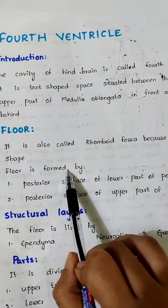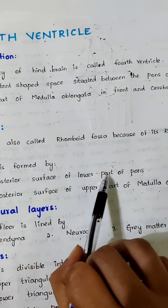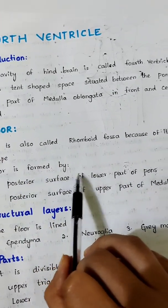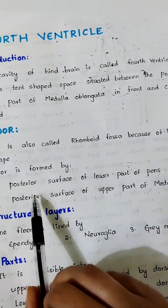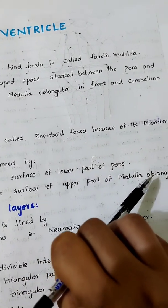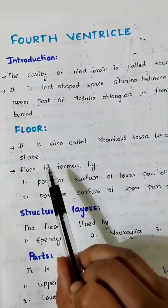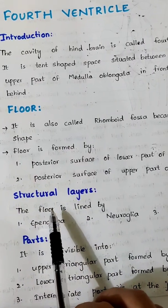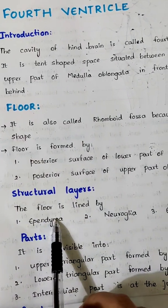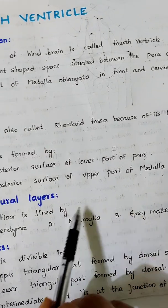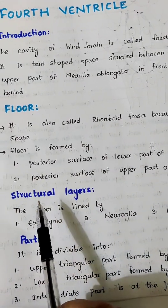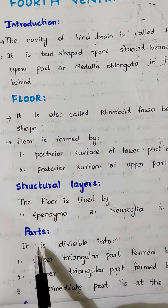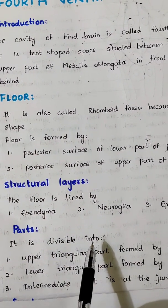The floor is formed by two things: first, the posterior surface of the lower part of the pons, and second, the posterior surface of the upper part of the medulla. The floor has three structural layers: ependyma, neuroglia, and gray matter.